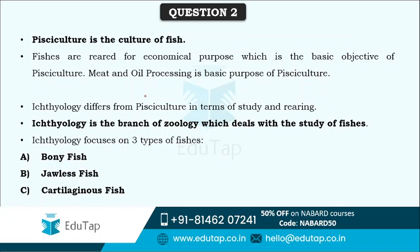Fishes are reared basically for economic purposes, and that is the basic objective of Pisciculture. There is a minute difference between Ichthyology and Pisciculture: Pisciculture is the rearing of fishes, while Ichthyology is a branch of zoology which deals with the study of fishes. Ichthyology focuses mainly on three types of fishes: bony fish, jawless fish, and cartilaginous fishes.